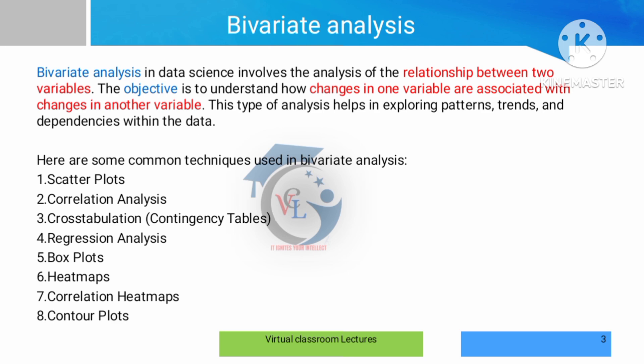The techniques used in bivariate analysis are: scatter plots, correlation analysis, cross tabulations or contingency tables, and regression analysis. These are the main techniques we use to find and analyze relationships between two variables.